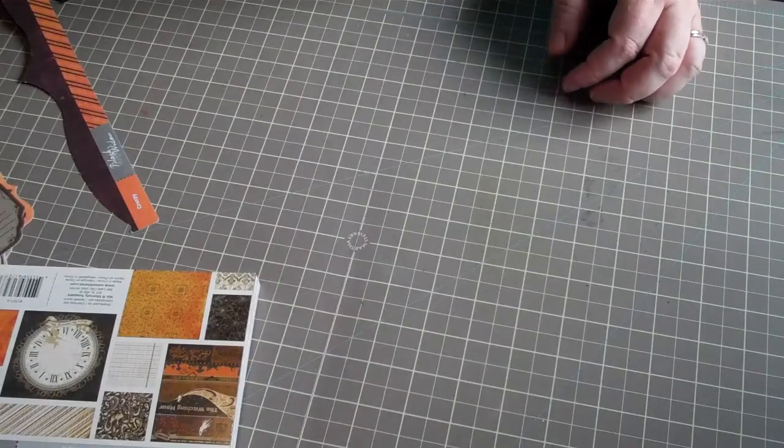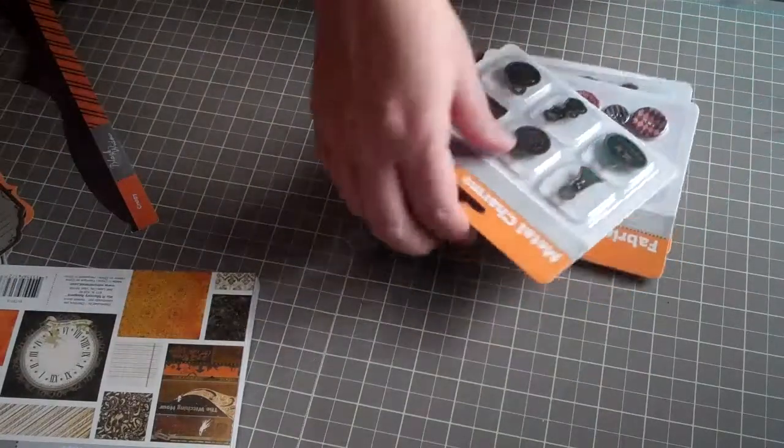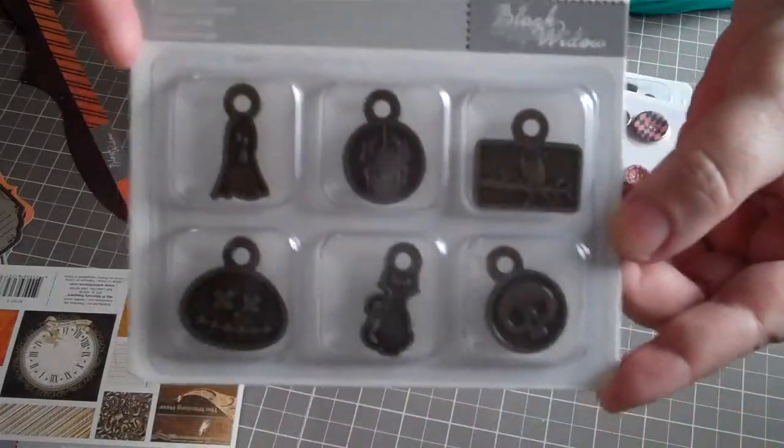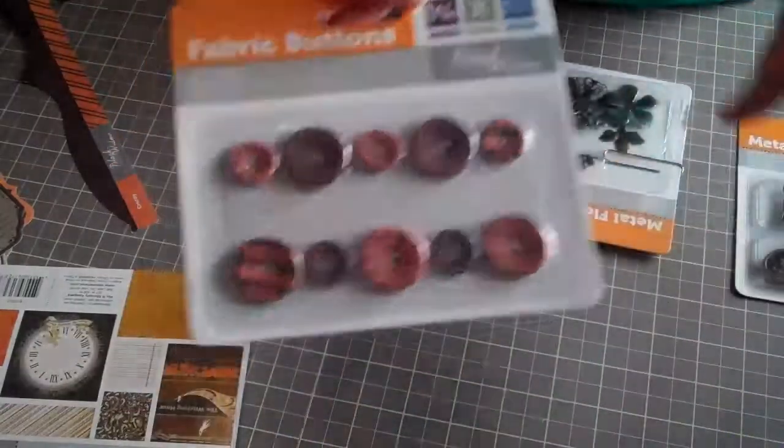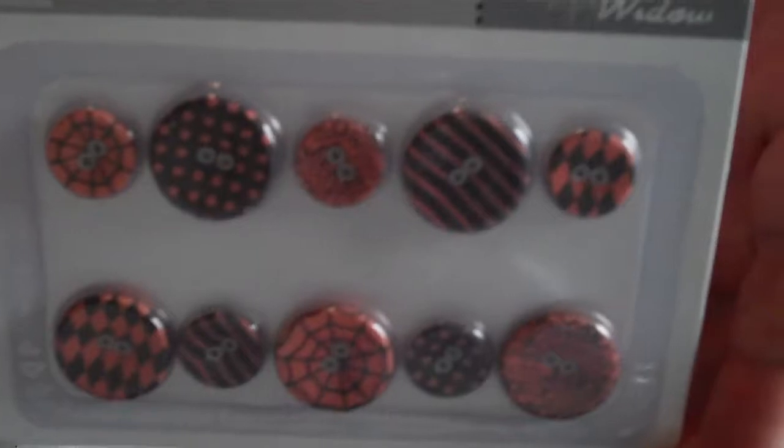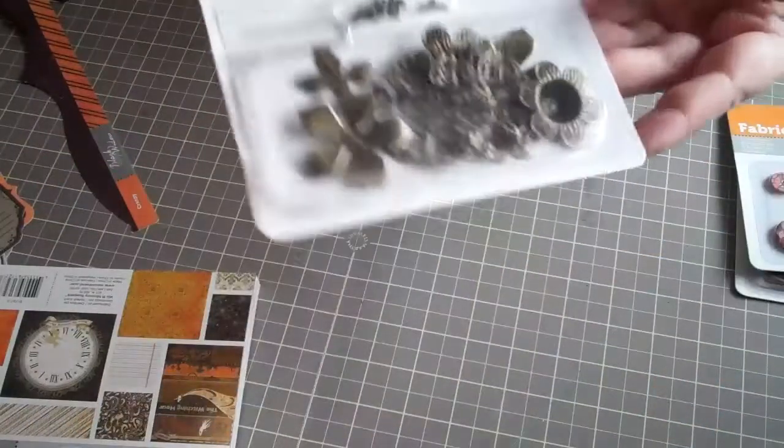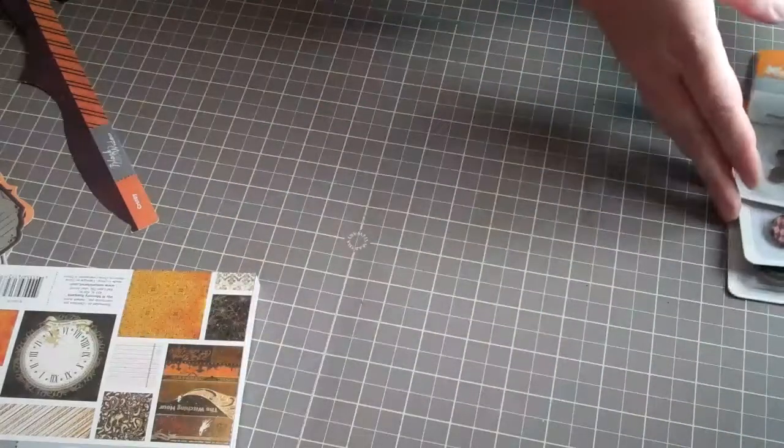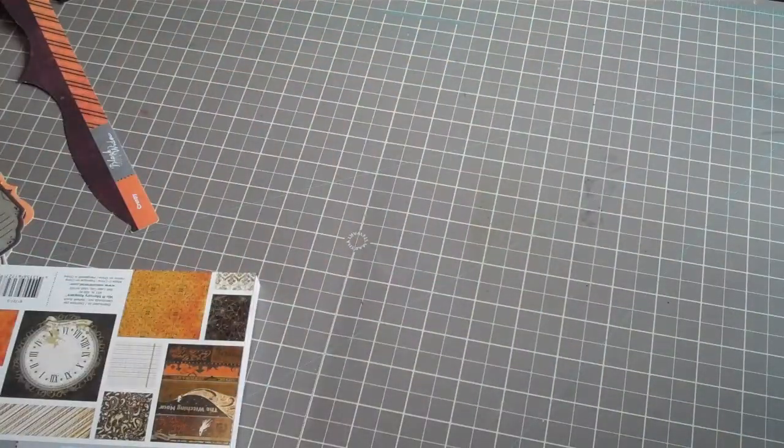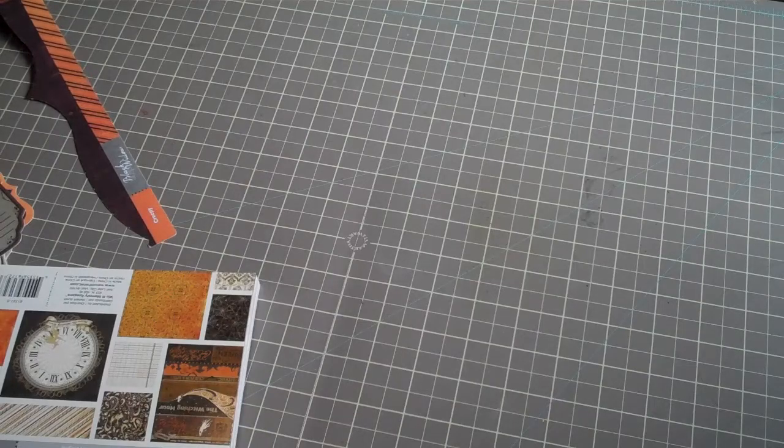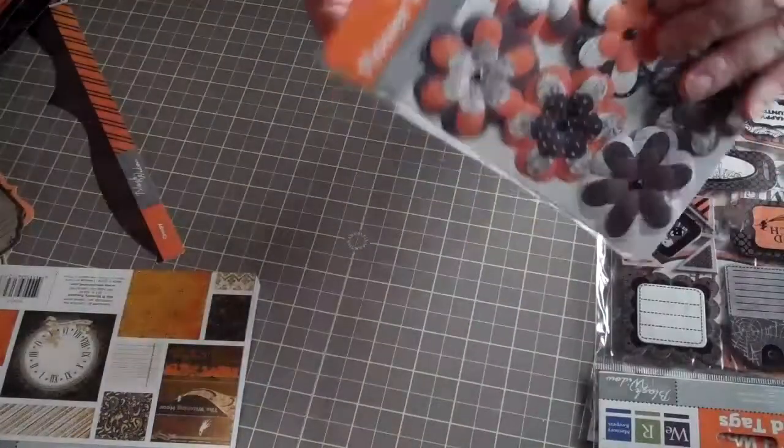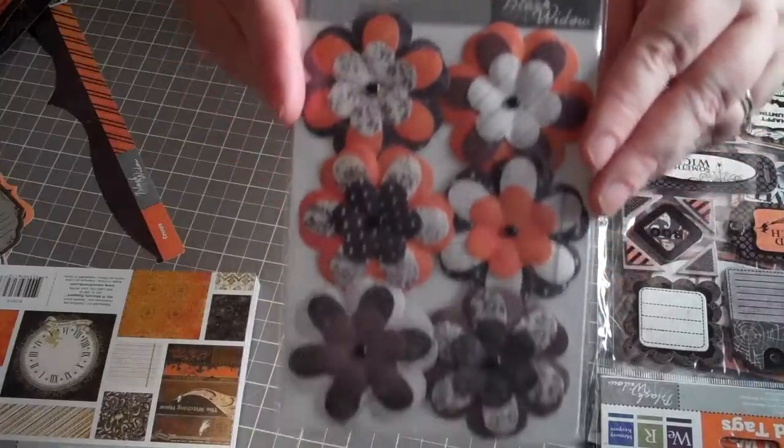Then we have some fun embellishments. We have metal charms. These are great. Lots of fun. Fabric buttons. Look at the detail. Aren't those awesome? Metal flowers. We love our metal flowers.